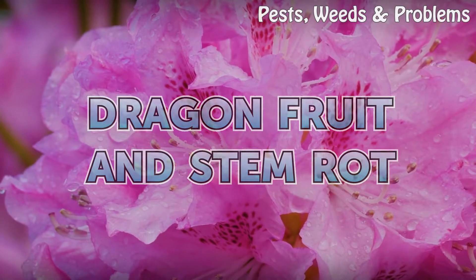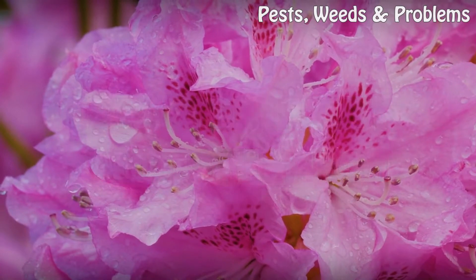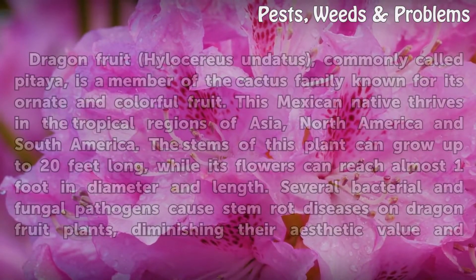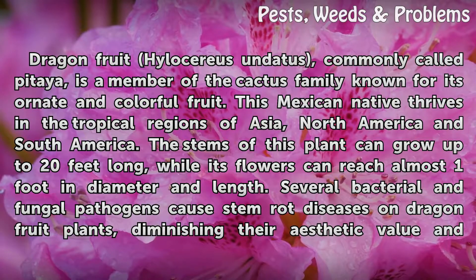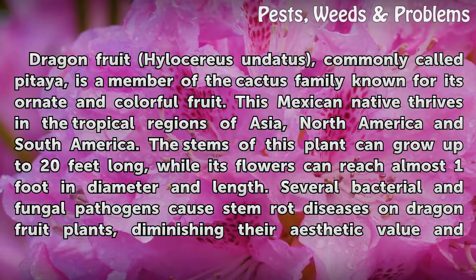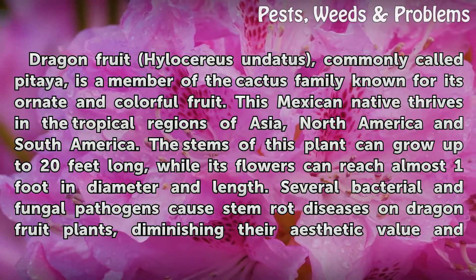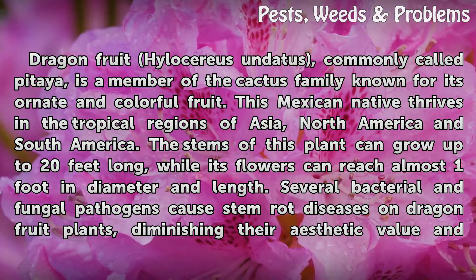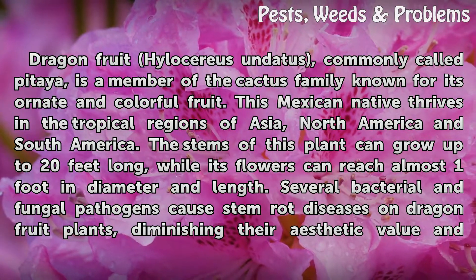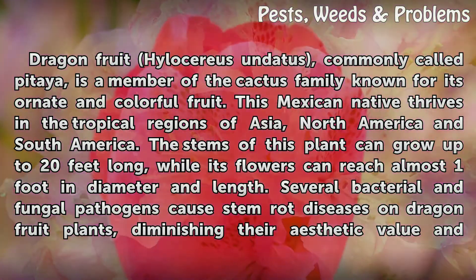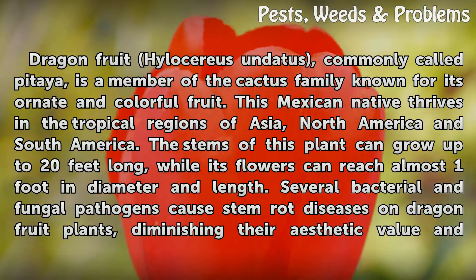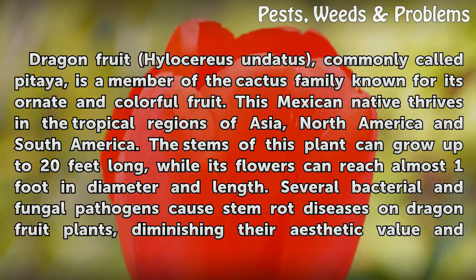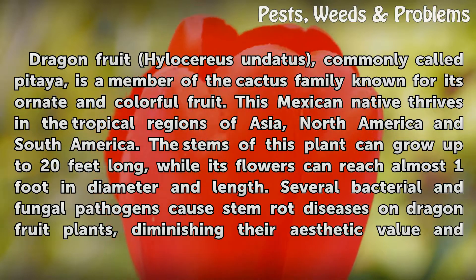Dragon fruit and stem rot. Dragon fruit, Hylocereus undatus, commonly called pitaya, is a member of the cactus family known for its ornate and colorful fruit. This Mexican native thrives in the tropical regions of Asia, North America, and South America. The stems of this plant can grow up to 20 feet long, while its flowers can reach almost one foot in diameter.